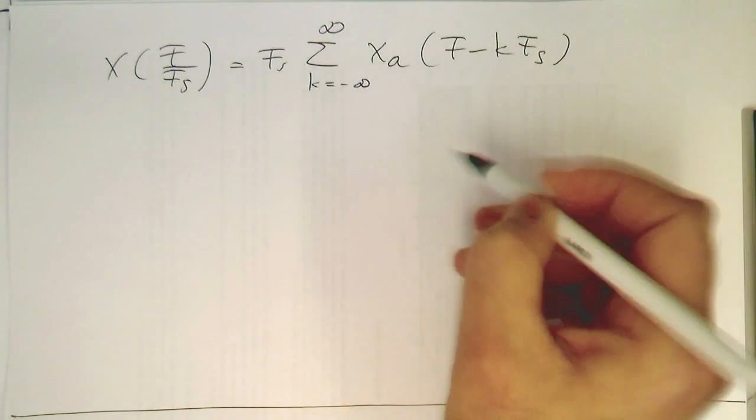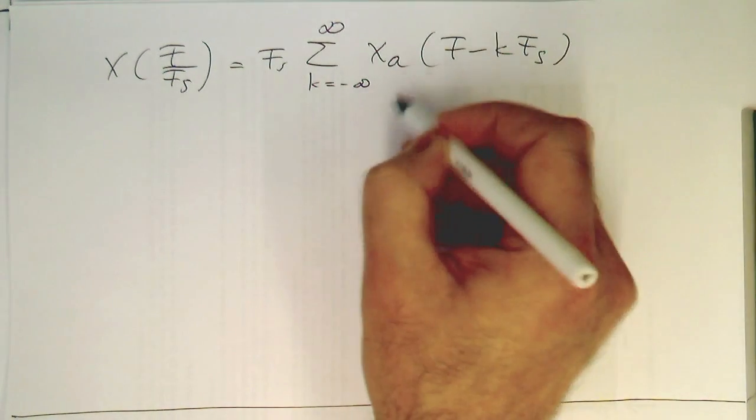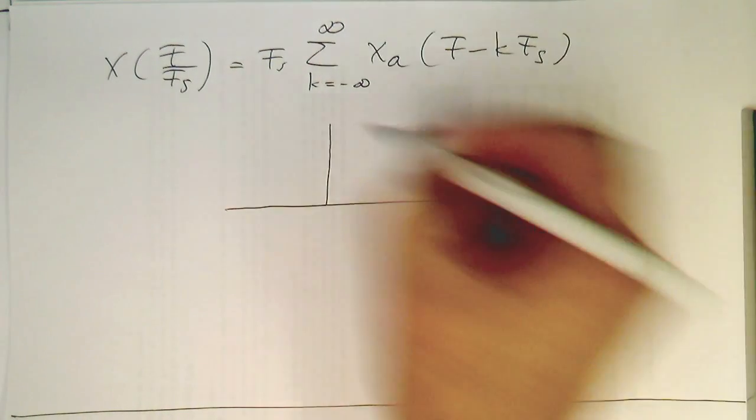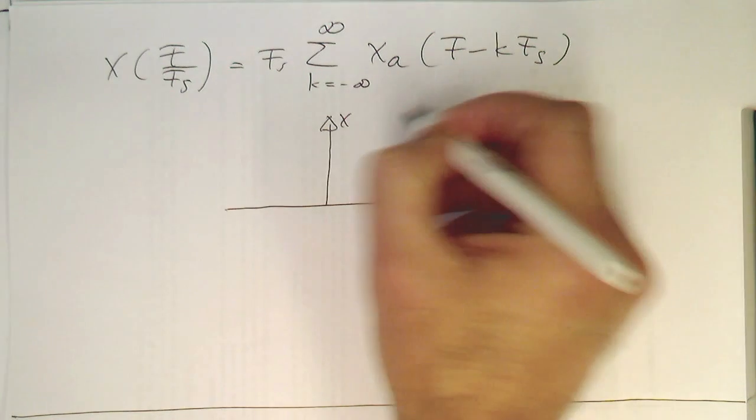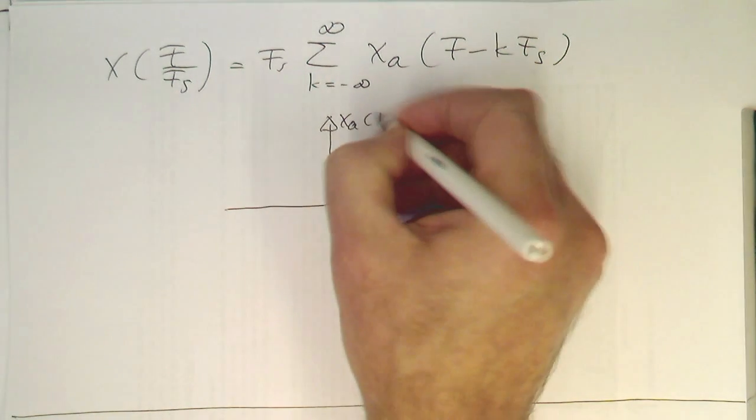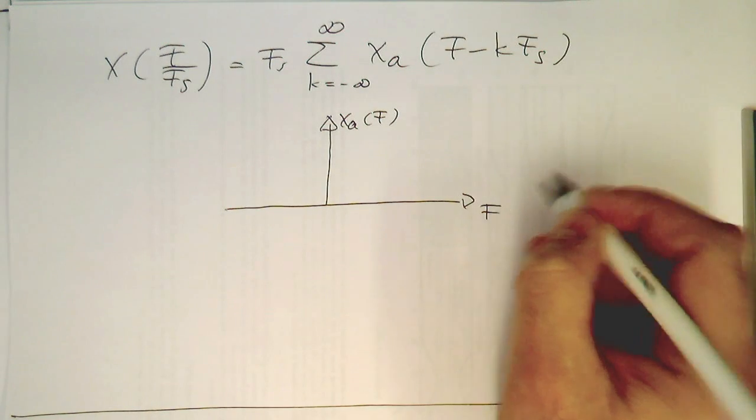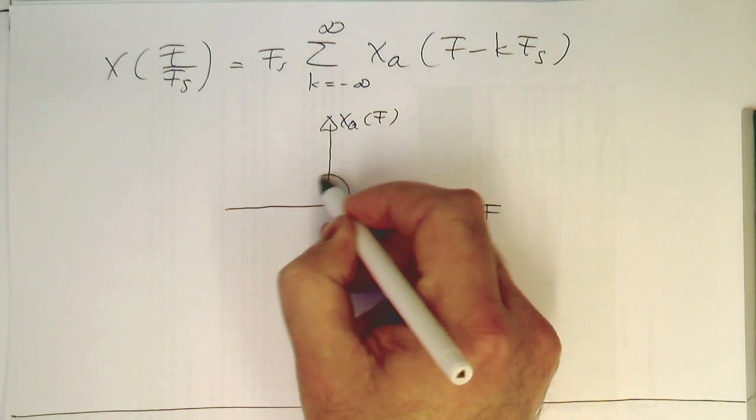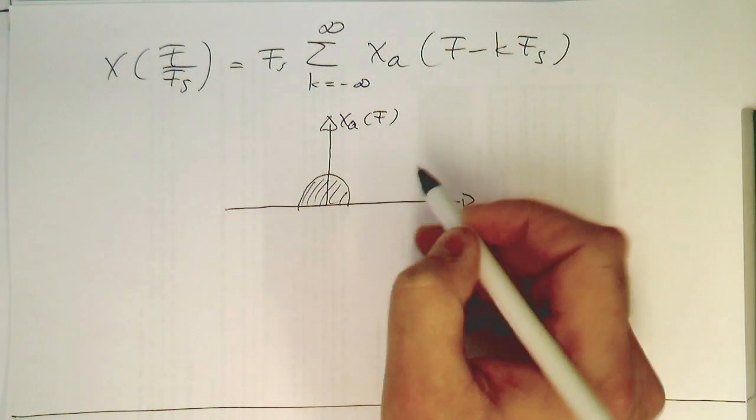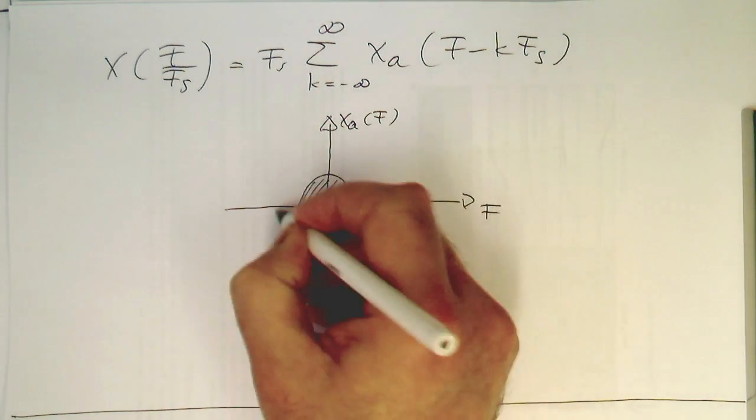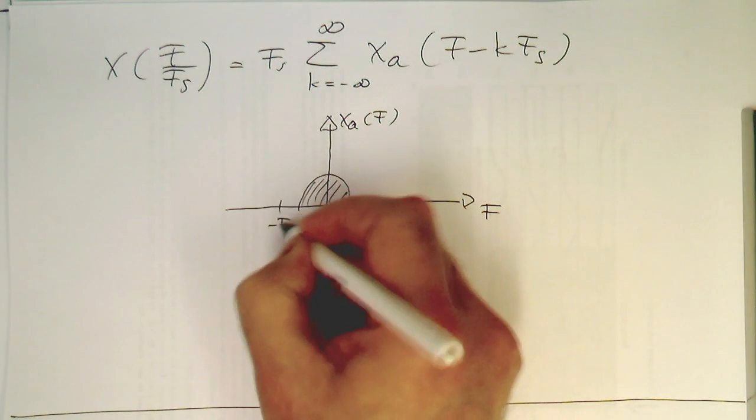So what does it mean in terms of graphical representation? Imagine our Xa looks, let's draw this properly here. That's our Xa of f, and the spectrum of our Xa looks like this, so that's our spectrum in the analog domain. Here we've got Fs/2 and here we've got minus Fs/2.